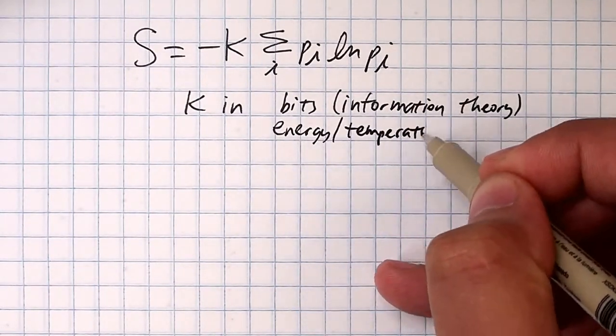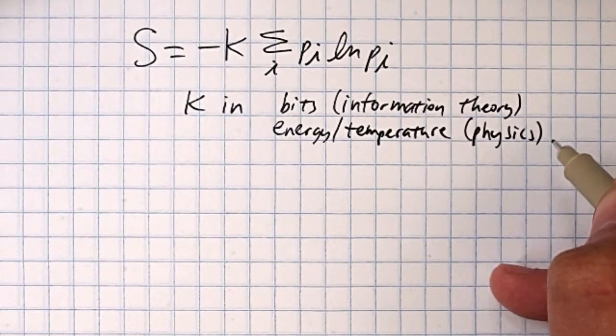Shannon's constant k sets the units that his uncertainty was measured in, and since he was interested in digital information, he thought of this in bits, whereas we measure entropy in units of Boltzmann's constant.